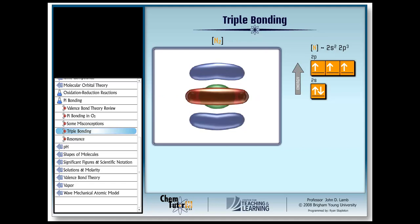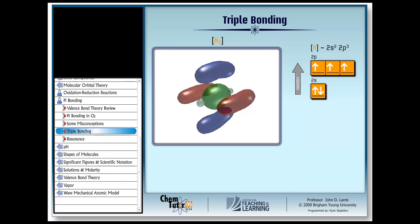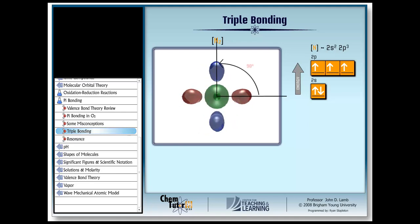So what do we end up with then? We have a sigma bond in the bond axis and two pi bonds at right angles to one another when looking down the bond axis.